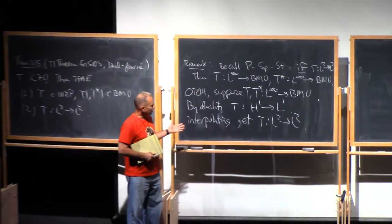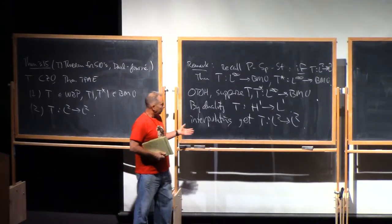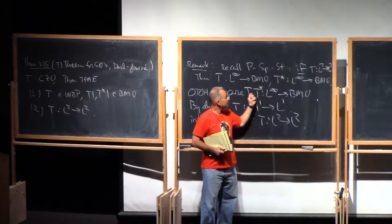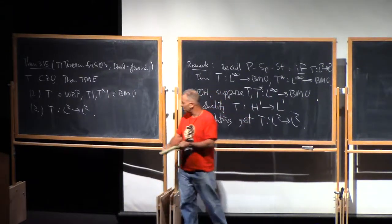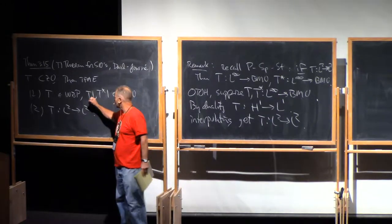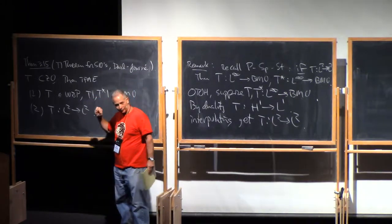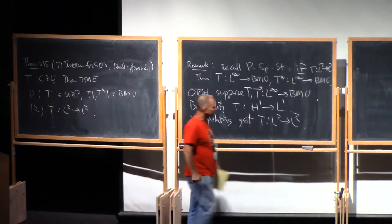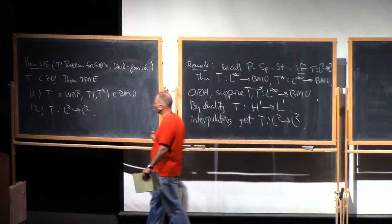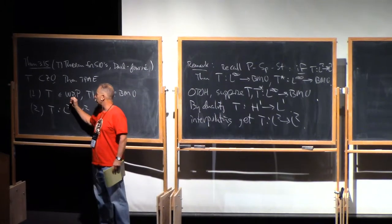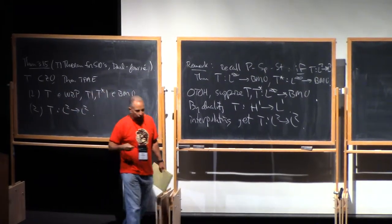So what's the T of 1 theorem saying? It's saying that you don't have to test T and T star on all of L infinity. You only have to test them on a very, very special function, which is the constant function 1. Except with one additional, but as we've seen, sort of mild hypothesis, which is the weak-boundedness property.